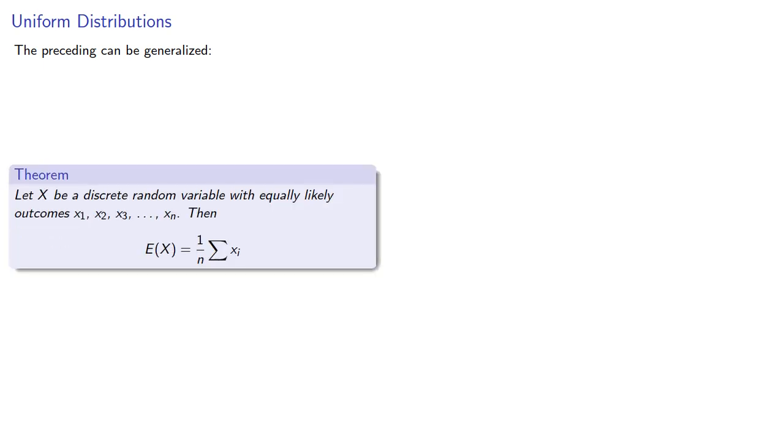And the preceding result can be generalized very easily. Let X be a discrete random variable with equally likely outcomes x₁, x₂, and so on up to xₙ. Then the expectation of X is one-nth the sum of the outcomes.